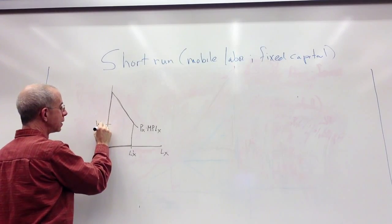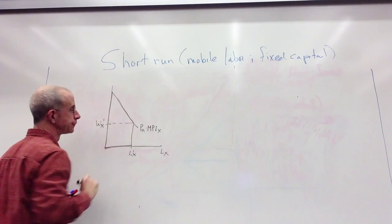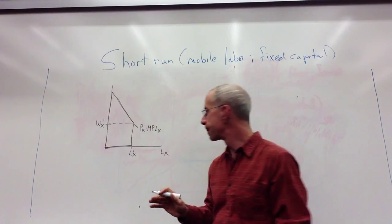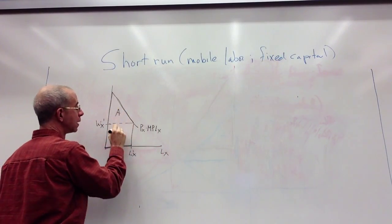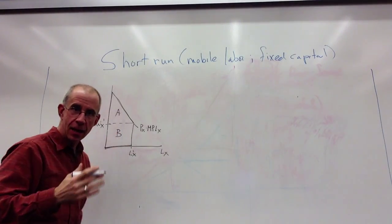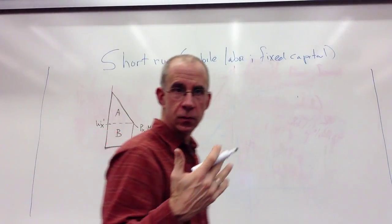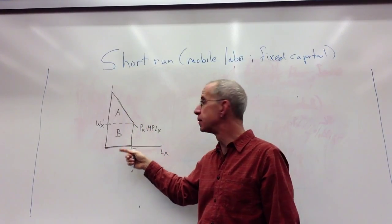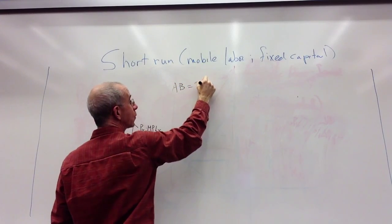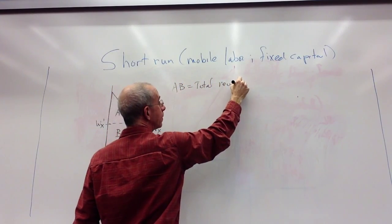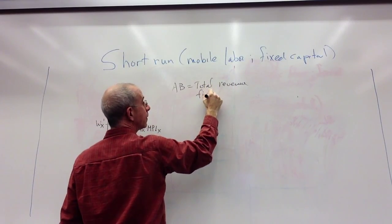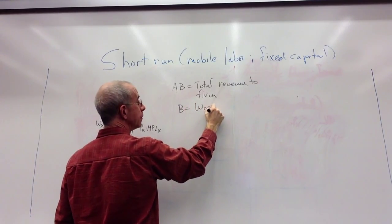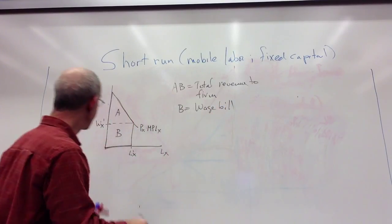Let's imagine that that's the wage, the market wage that you've got to pay to every worker that comes to work in your factory. So what we have here is an analogous concept to consumer surplus, but from the firm's standpoint. So A and B is the total revenue to the firm by hiring the workers. B is what you had to pay them, what economists call the wage bill. So B is how much you had to pay, that's the number of workers multiplied times the wage.